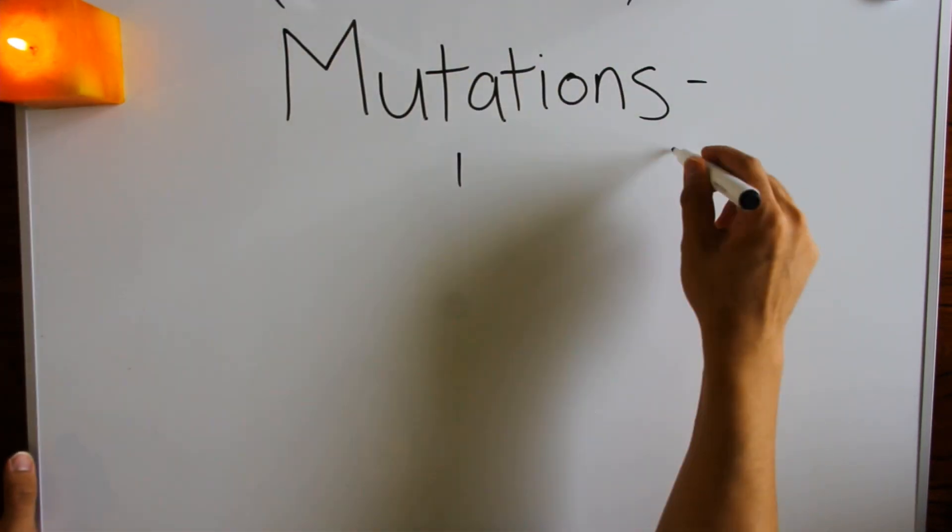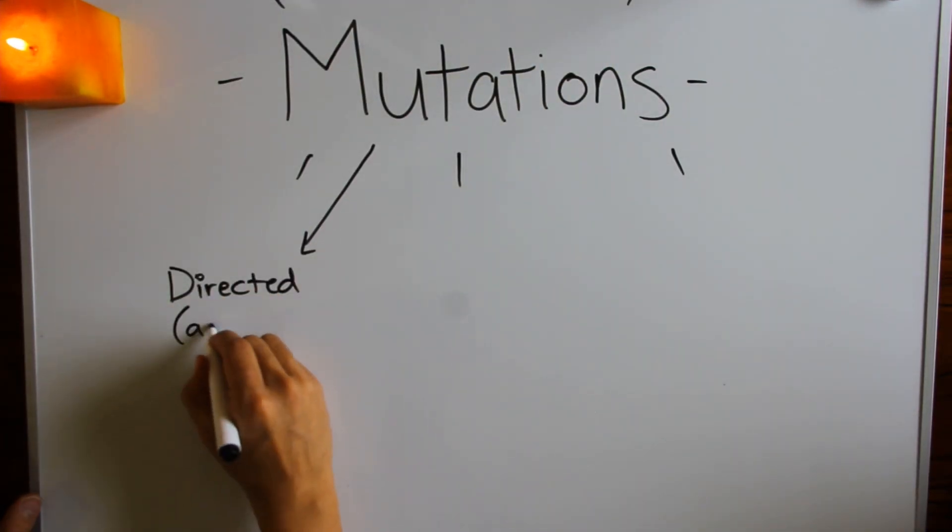That was the question that Joshua and his wife Esther Lederberg were trying to figure out in the 1950s. Not much was known about mutations back then, and the question on everyone's mind was how do mutations happen?